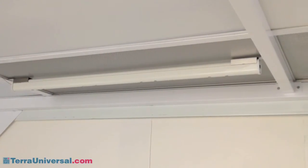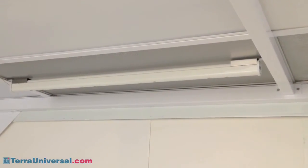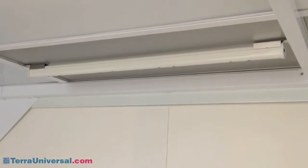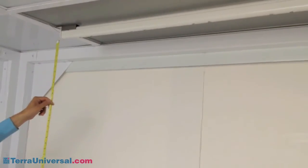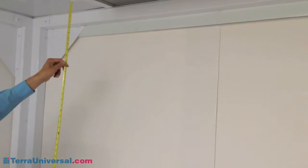You're looking at a Terra ionizing bar mounted with clips underneath a 4-foot long fan filter unit. The fan provides stable airflow for consistent, even delivery of the positive and negative ions.